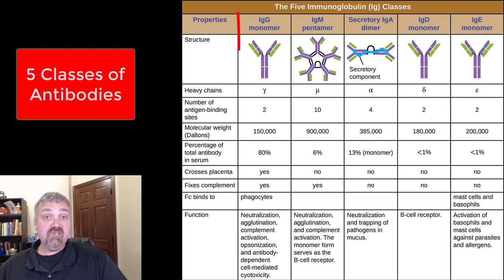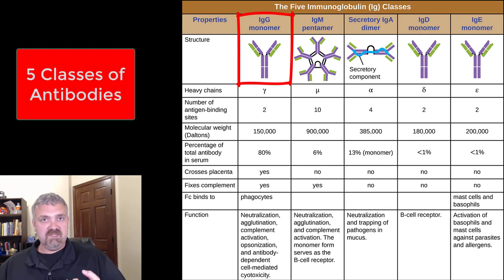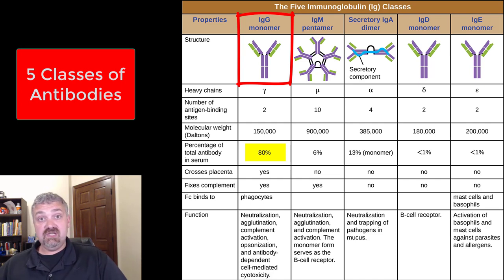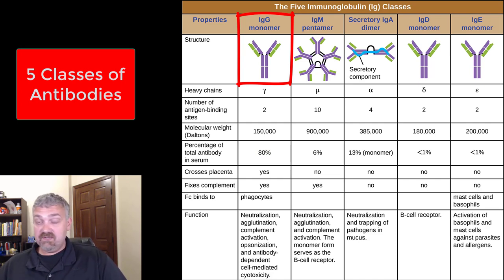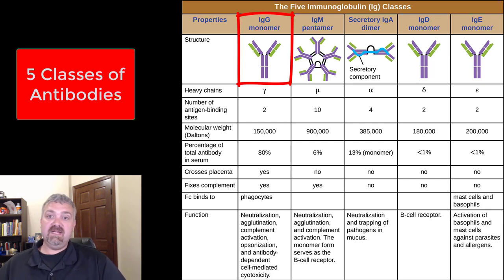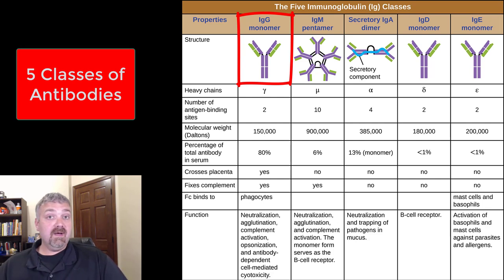So IgG. These are number one, most numerous by far — 80% of your antibodies are going to be IgG antibodies. They are effective at destroying and inhibiting bacteria, viruses, and bacterial toxins. So these are the most common and most effective antibodies we have.